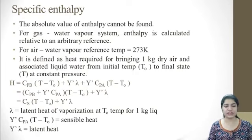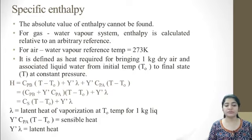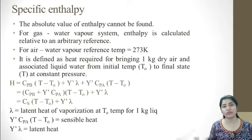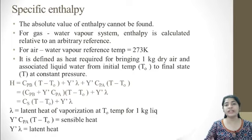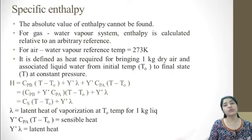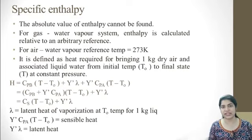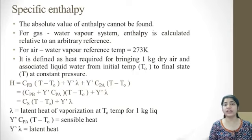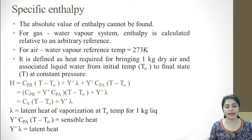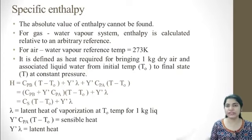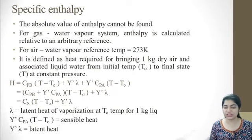The full expression is: CpB(T − T0) + Y'λ + Y'·Cpa·(T − T0). Lambda is the latent heat of vaporization at T0 for 1 kg liquid. Y'·Cpa·(T − T0) is the sensible heat required for your water. Sensible heat raises the temperature of water, while latent heat is associated with phase change — for example, from 100°C water to 100°C steam. So the final expression is H = Cs·(T − T0) + Y'·λ, where Cs is the humid heat (Cs = CpB + Y'·Cpa). This is your specific enthalpy.